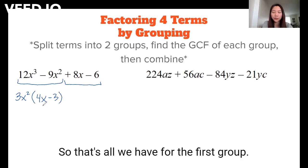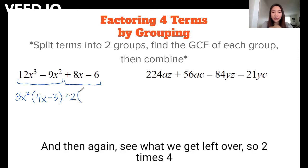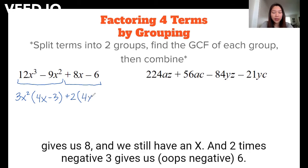So that's all we have for the first group. For the second group, 8 and negative 6 have a positive 2 in common, and then again, see what we get left over. So 2 times 4 gives us 8, and we still have an x.